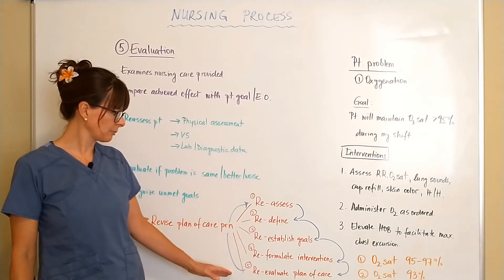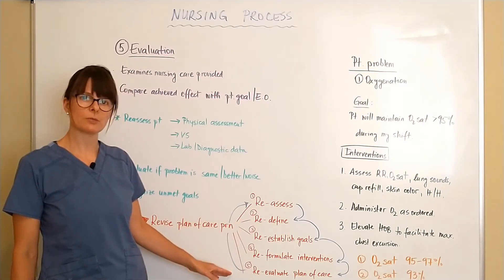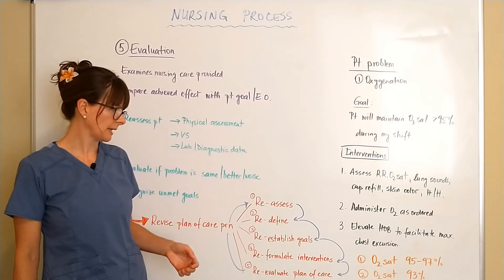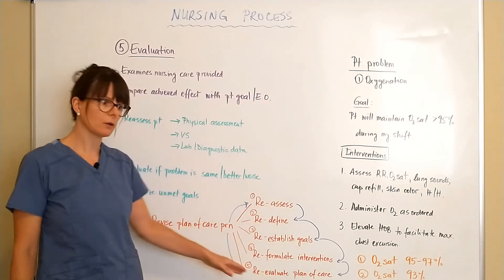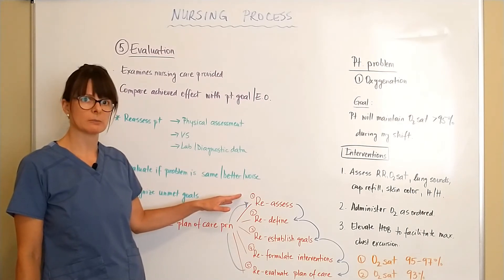You can see everything is labeled here steps one through five which basically goes through the nursing process again. One after the other we'll just methodically follow the process until we arrive back at the reassessment.